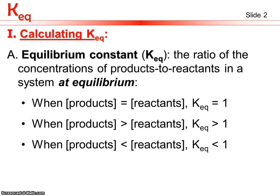At equilibrium, when the concentration of products equals the concentration of reactants, it's a ratio of one to one — a fraction of one over one, which equals one, so KEQ equals one. If there is a larger concentration of products than reactants, KEQ will be greater than one. If products are less than reactants, KEQ will be less than one.